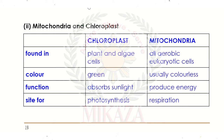The second differentiation is mitochondria versus chloroplasts. Chloroplasts are found in plant and algae cells, while mitochondria are found in all eukaryotic cells. Mitochondria are involved in aerobic respiration, which requires oxygen for living.